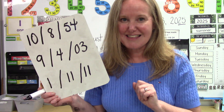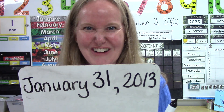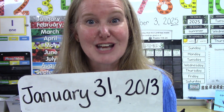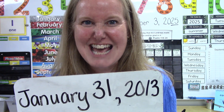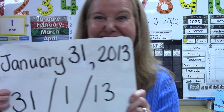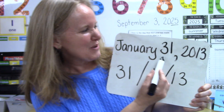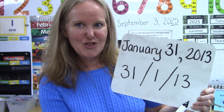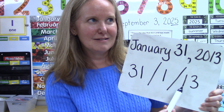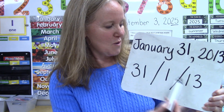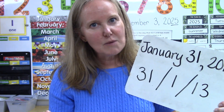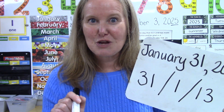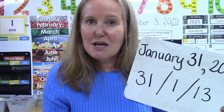I have a special date to show you. Here's a date I want you to try: January the 31st, 2013. Pause the video and write it down. January the 31st, 2013 is 31-1-13. That's 3-1-1-1-3 — the same way backwards and forwards! Did you know that if you can read a number or a word backwards and forwards the same way, it is called a palindrome?